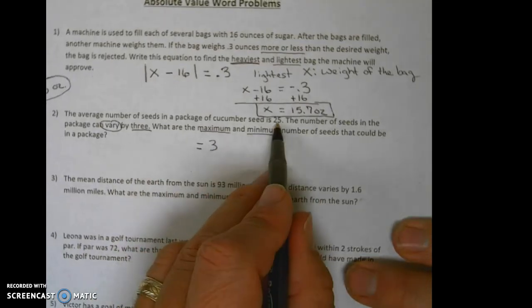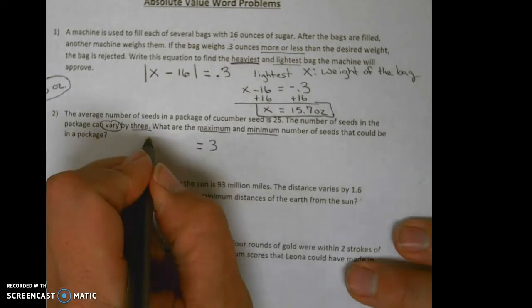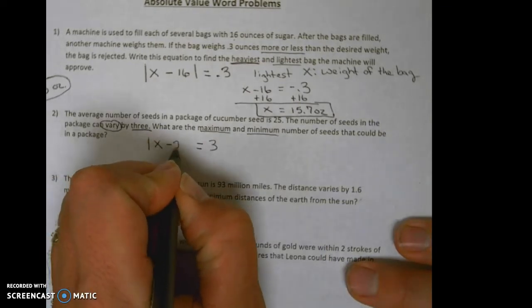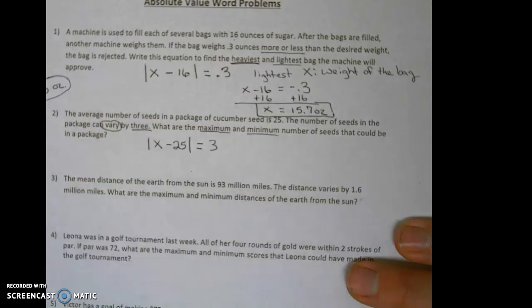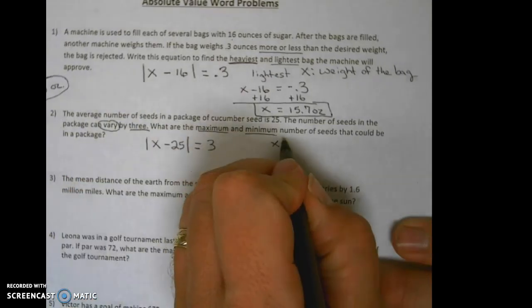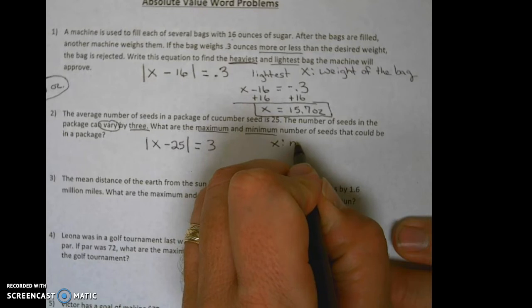And then the seeds is 25, so we're going to do the absolute value of x minus 25, and x is going to be the number of seeds.